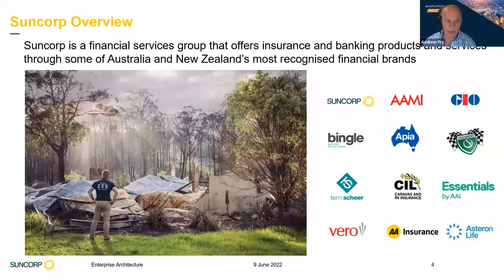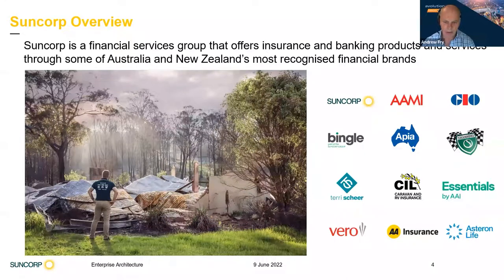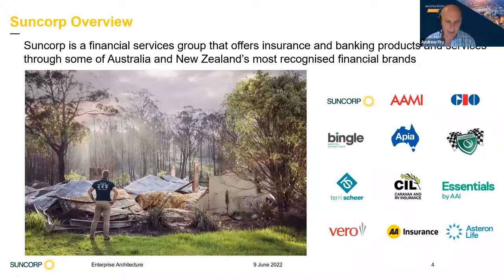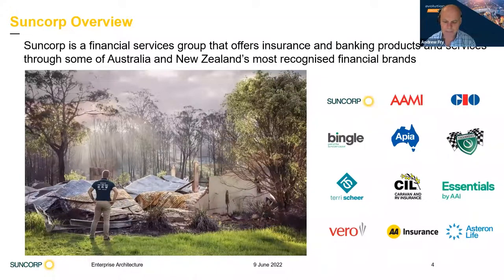A bit about Suncor. It's a financial services group that operates in Australia and New Zealand across insurance and banking. In the Australian market, we're one of the top two in insurance, and we're also a second-tier bank. For our international guests, Australia is a place of fire and flood, and our core business in insurance is insuring risks like these, making sure that we have a prompt and efficient claim service.